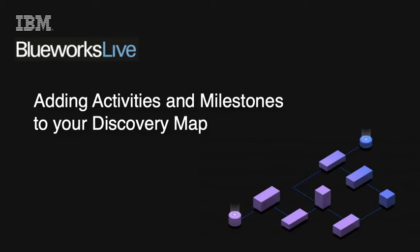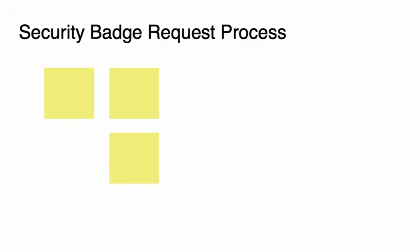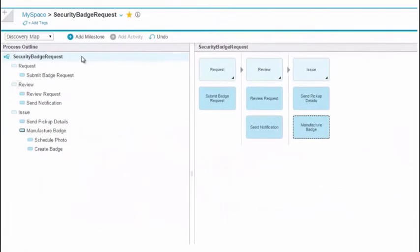This video shows you how to add and edit activities and milestones in a BlueWorks Live Discovery Map. The Discovery Map view is an easy way to capture the output of brainstorming sessions for your process modeling projects.